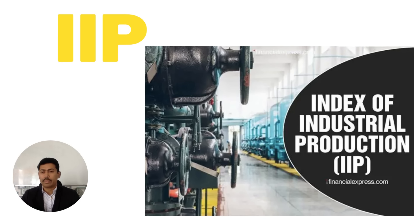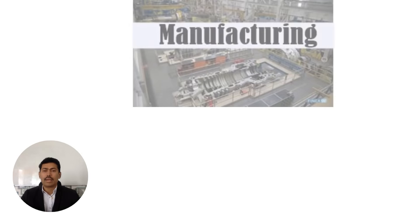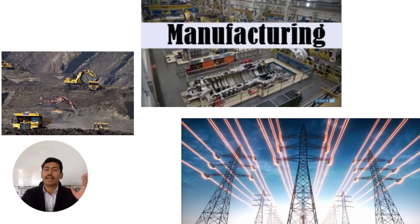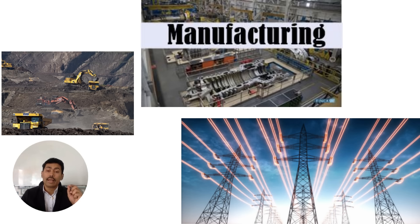There are many indicators for stock market prediction. Let us look at one — the IIP, which stands for Index of Industrial Production. It is a combination of mining, manufacturing, and electricity. Manufacturing here covers everything from paper to aircraft and trains. All three put together form the IIP index, which is released by the government monthly on the 12th of every month at 5:30.